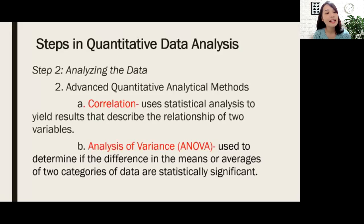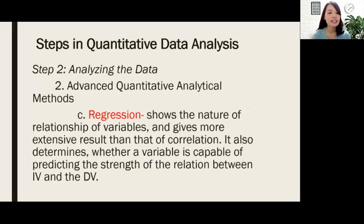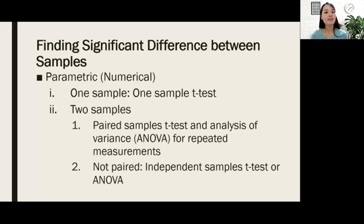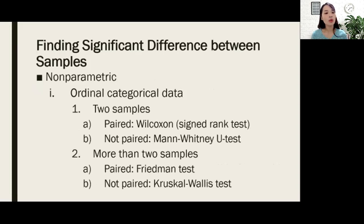Moving forward, we have advanced quantitative analytical methods. Correlation uses statistical analysis to describe the relationship of two variables. Analysis of Variance (ANOVA) is used to determine if the difference in the means of two categories of data is statistically significant. Regression shows the nature of the relationship of variables and gives more extensive results than correlation — it also determines whether a variable is capable of predicting the strength of the relation between the independent and dependent variables. For parametric tests, data are at the interval and ratio levels of measurement. For non-parametric tests, you test nominal or categorical data.